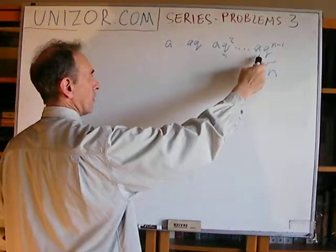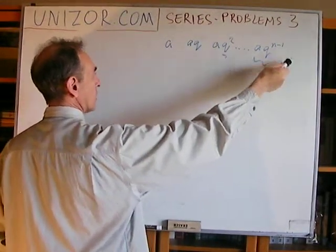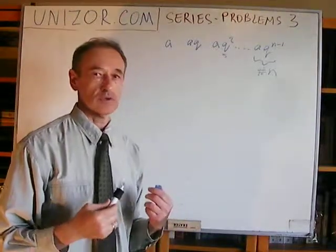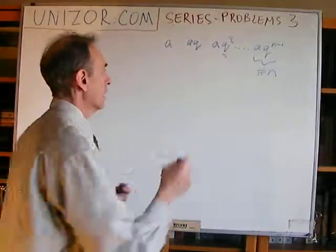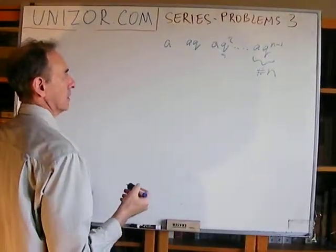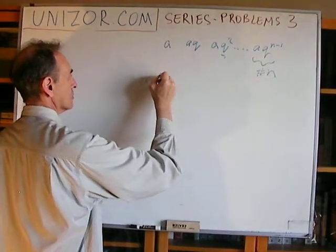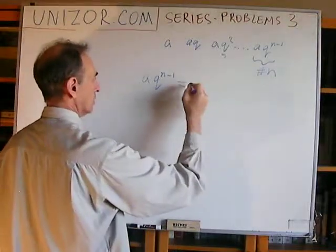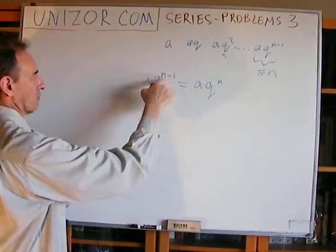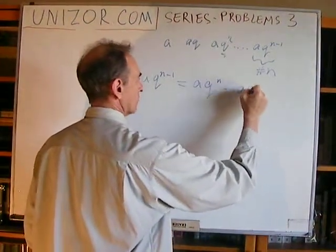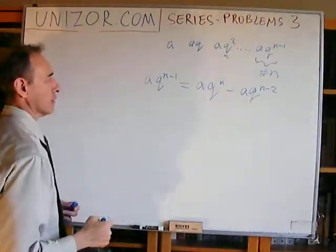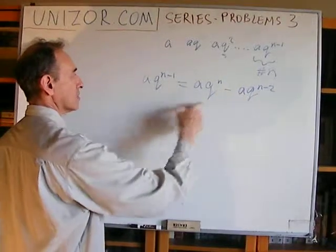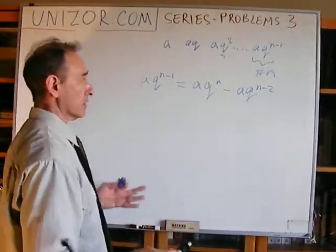Every term of this sequence is equal to the difference between the next one and the previous one. If we know the formula for any term of a geometric sequence, then we can write an equation: the nth term equals the (n+1)th term minus the (n-1)th term. This is the immediately following member minus the immediately preceding one.